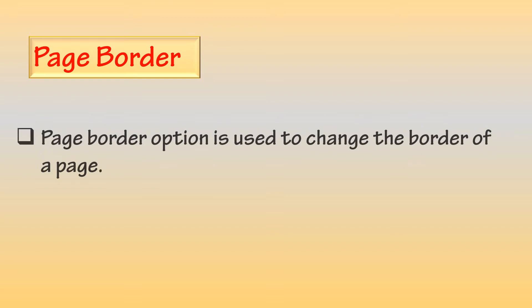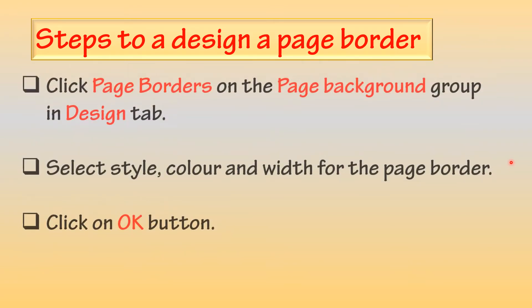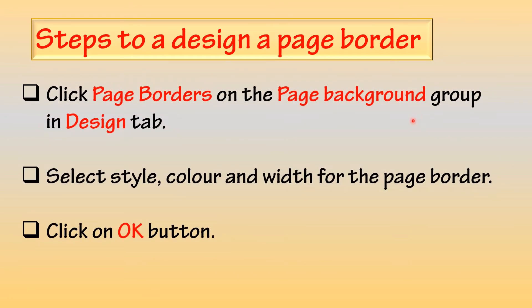Page Border: The Page Border option is used to change the border of a page. Steps to Design a Page Border: Click Page Borders on the Page Background group in the Design tab. Select Style, Color, and Width for the page border, then click the OK button.